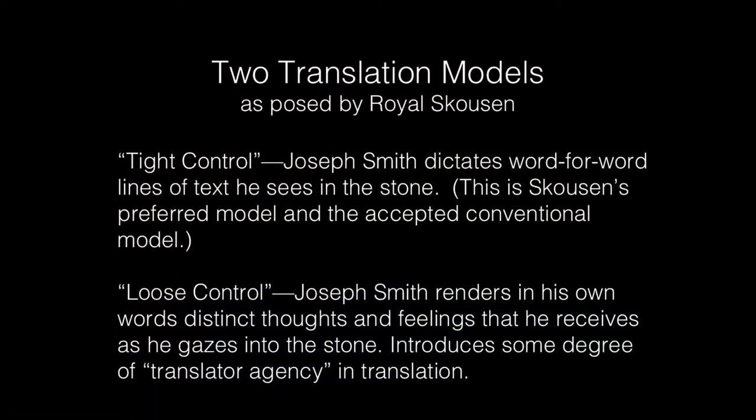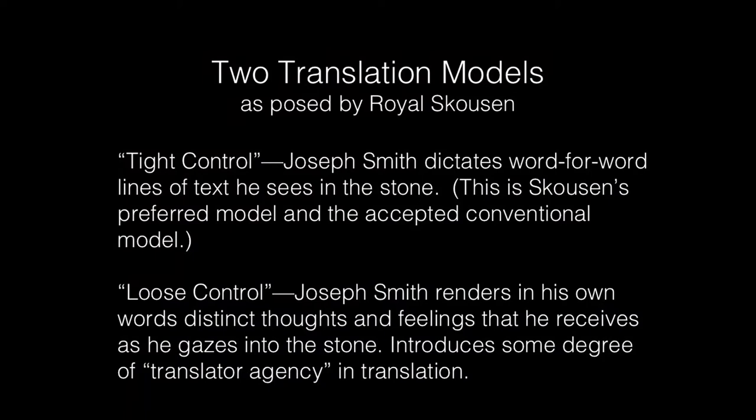As you can see here, these both are from Royal Skousen, whose specter is over everything we do today as one of the scholars who has kind of set the standard for a particular type of interpretation of translation in the Book of Mormon. The tight control model is verbatim dictation — that's what we're talking about with tight control. And then we're thinking about new models that could be loosely included in the term loose control, where Joseph Smith is using his own words and the translator has impressions, thoughts, and feelings that are going to be part of the final product.